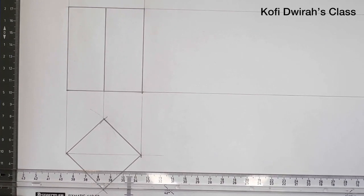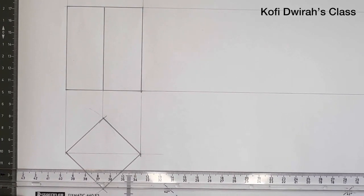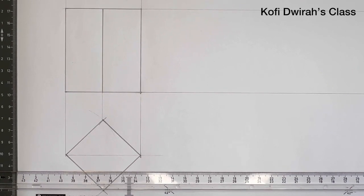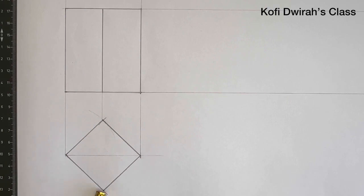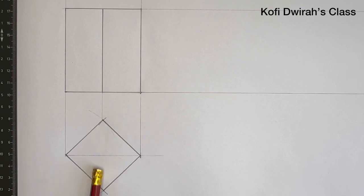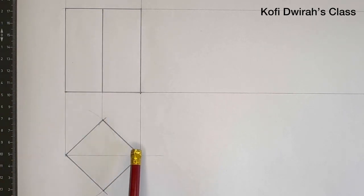This is the front view, or front elevation, of the square prism. We have the plan here, and after drawing the plan you extend all these lines. There are points — this point, this point, this point, and this point — and you extend these lines up to get the front view. Then you extend all the lines here, so this is the front view.